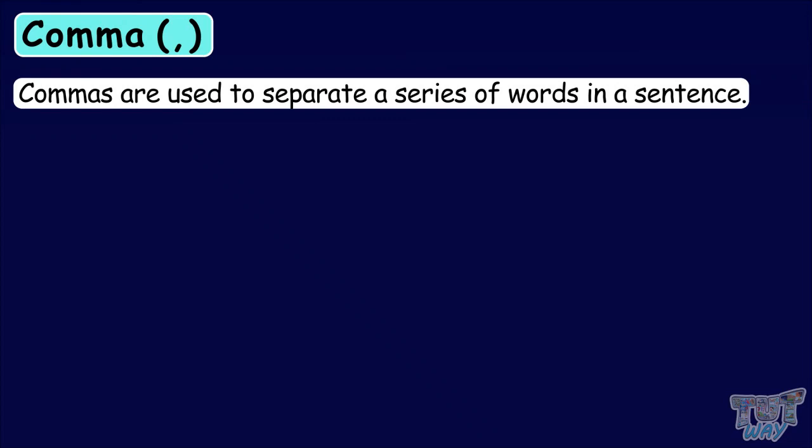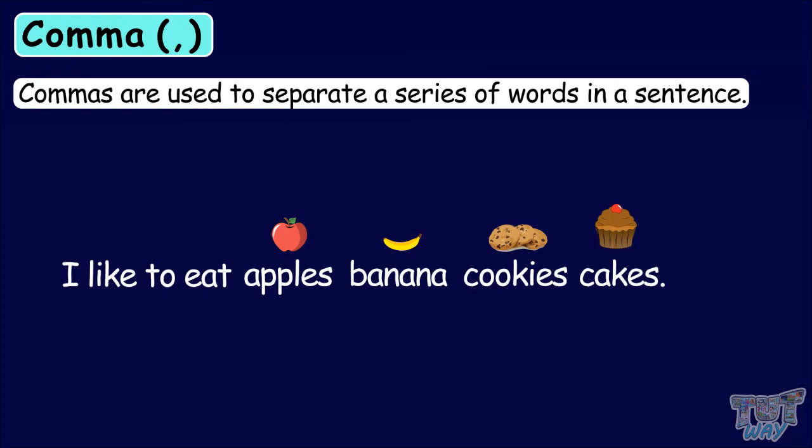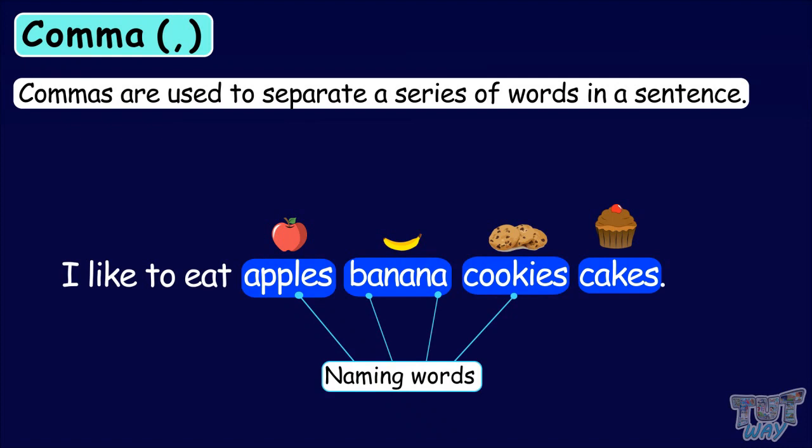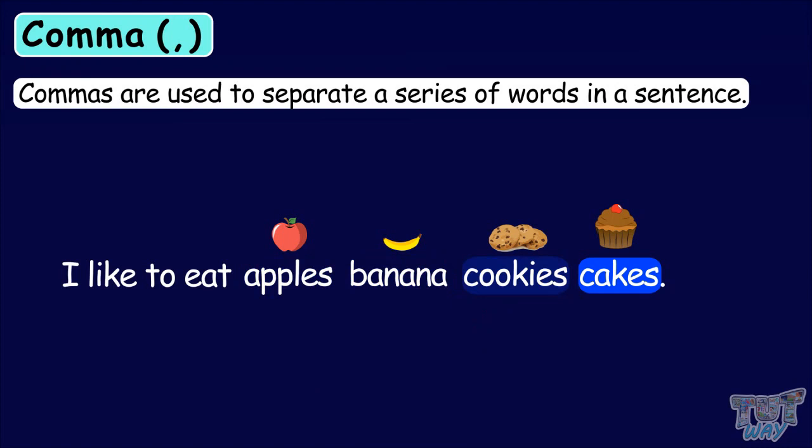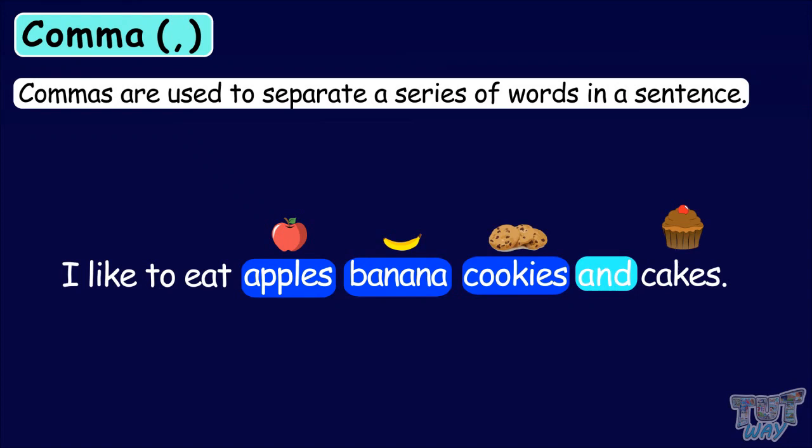Here we have four naming words, or four nouns in a series: apples, bananas, cookies, and cakes. Cookies and cakes are separated by means of the conjunction 'and', but the nouns apples, bananas, cookies will be separated by commas. Yes, this is the right way of putting commas between a list of nouns.